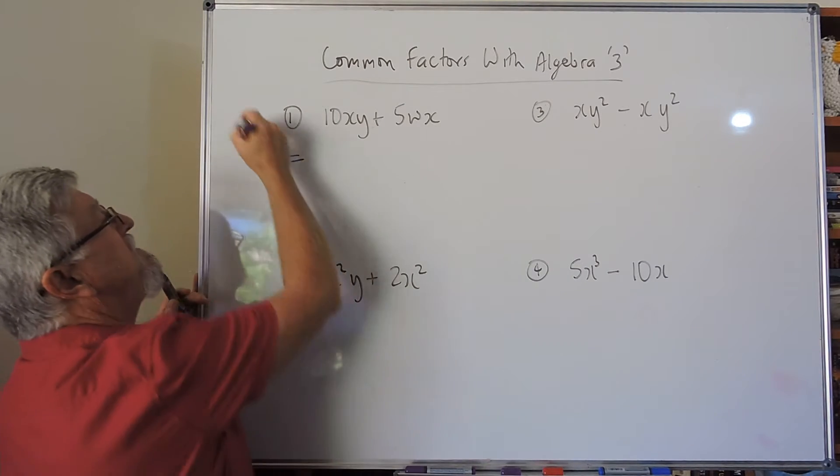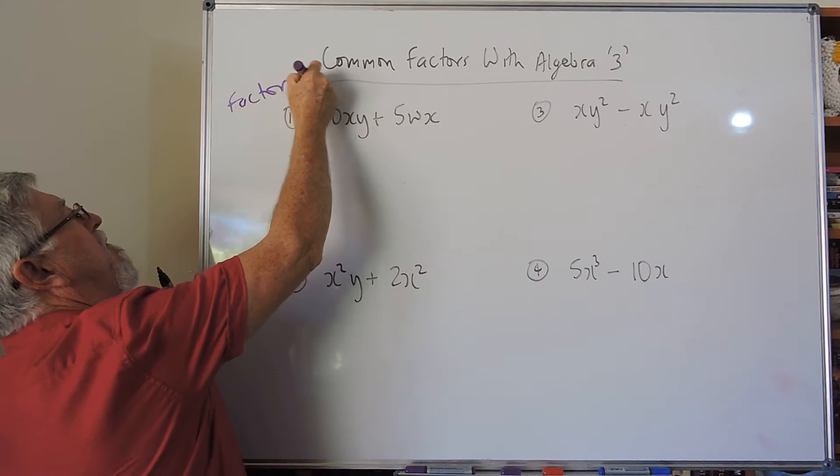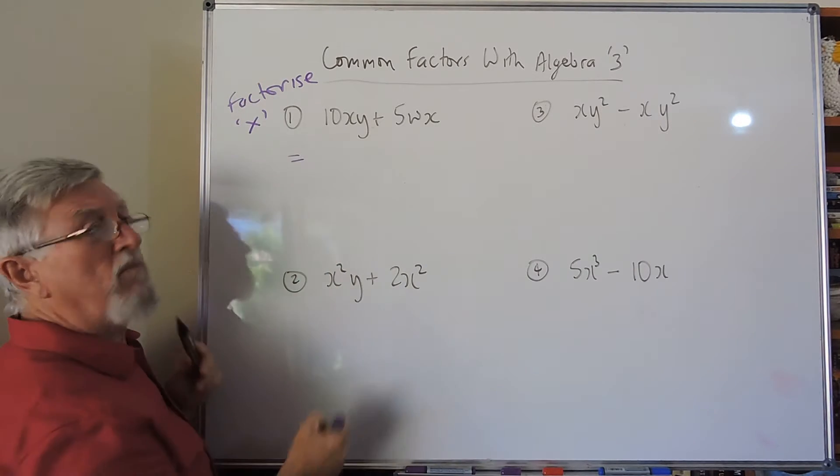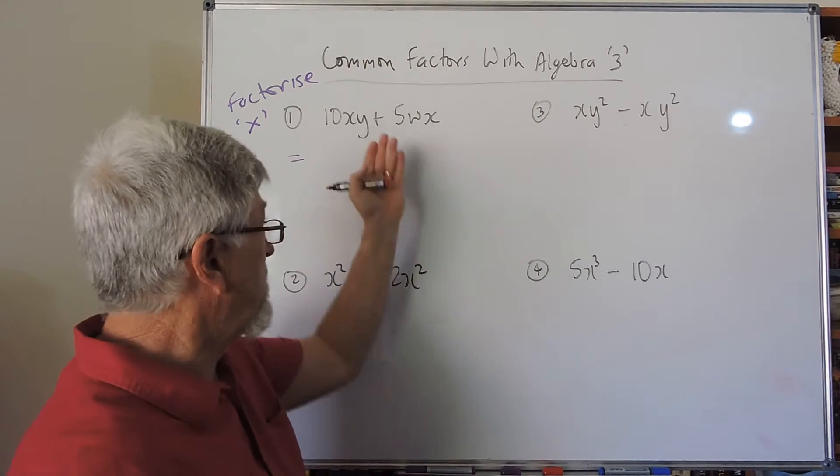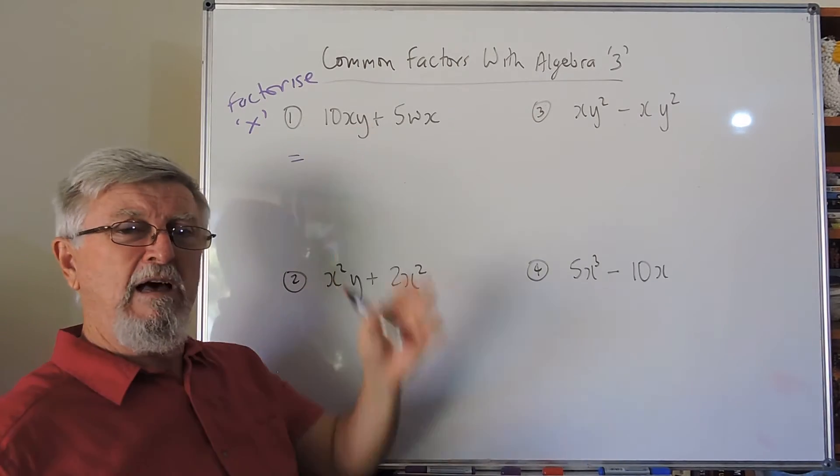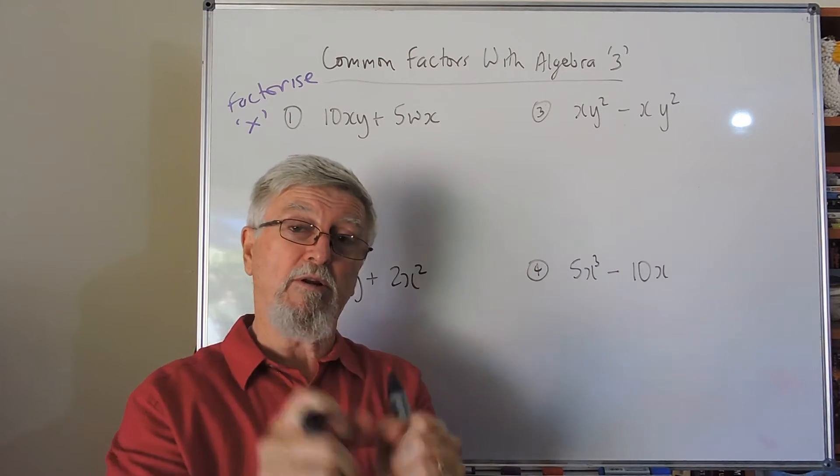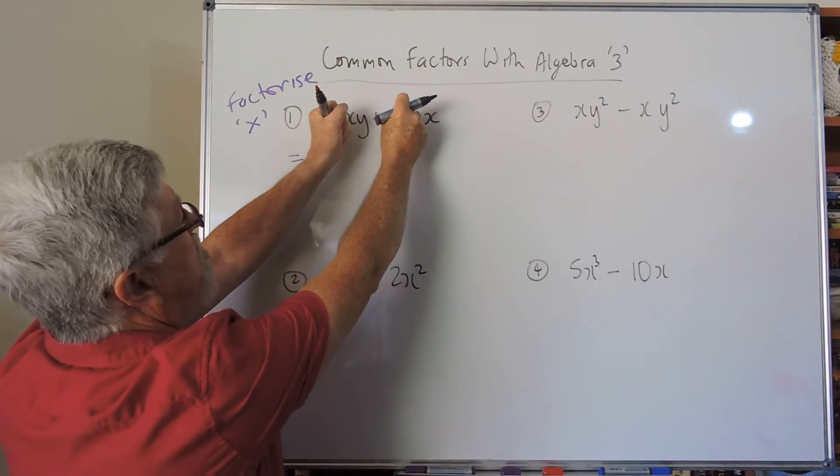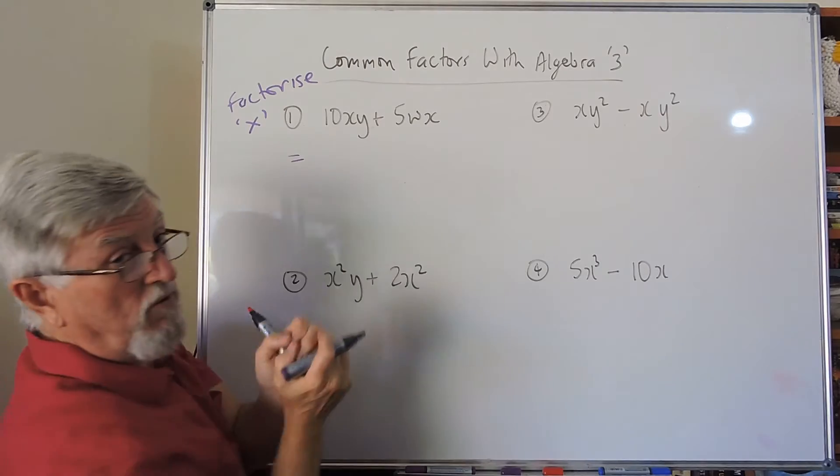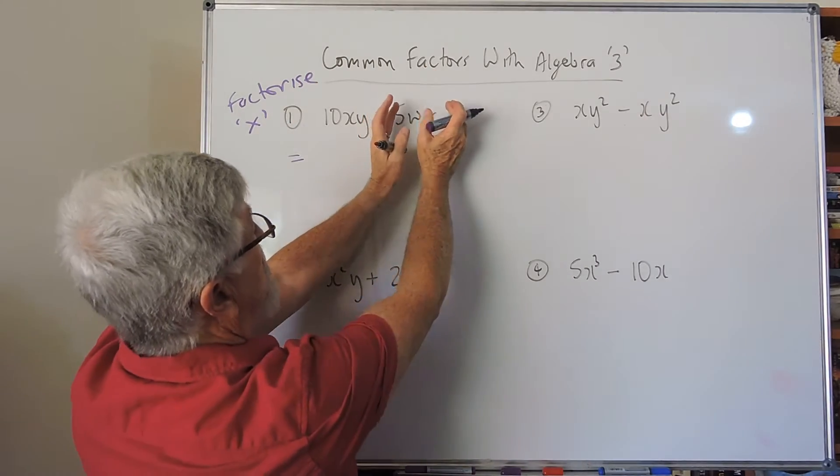Factorize means putting a multiply into the situation. So this is all connected by an addition. I want everything to be connected by a multiply. What I want to do now is pull everything out of both of those, the first term and the second term, and write it outside the brackets.